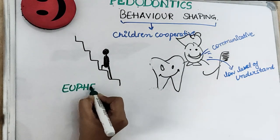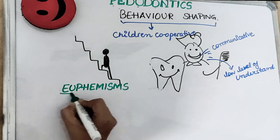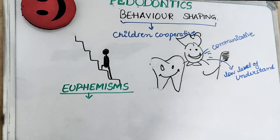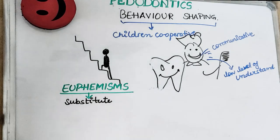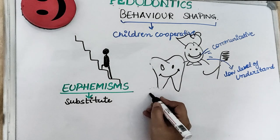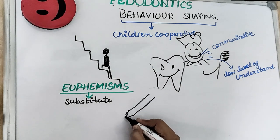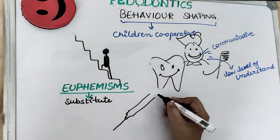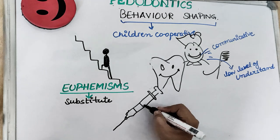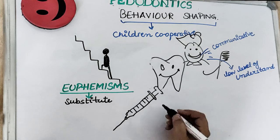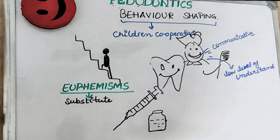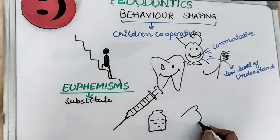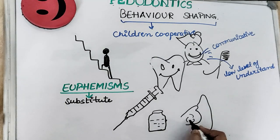Euphemisms are indirect words or expressions — they are substitute words which can be used in the presence of children. The choice of words should be at a level which a child can understand. Therefore, it is very important that we address the child using euphemisms or reframing.